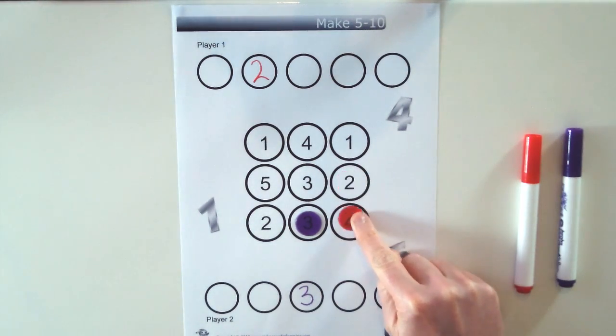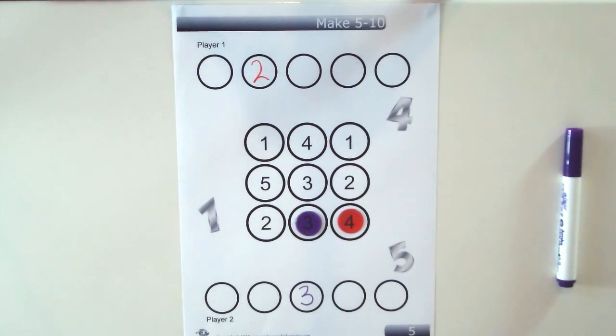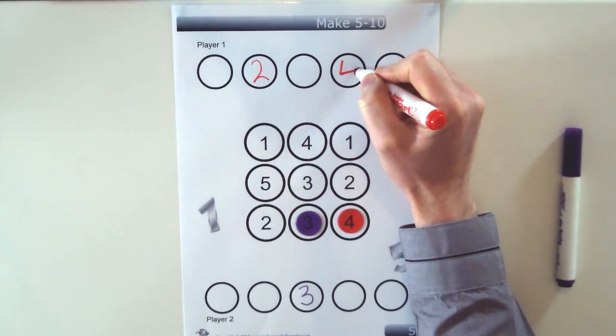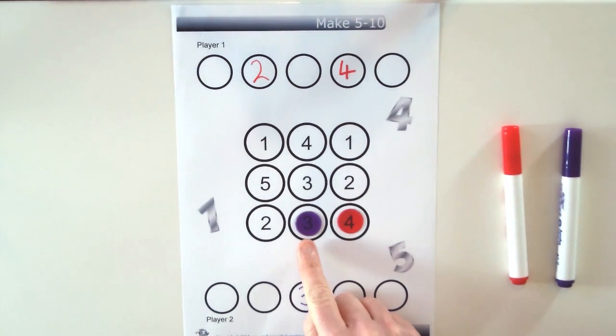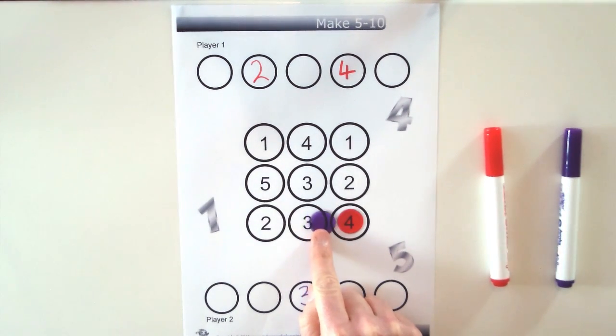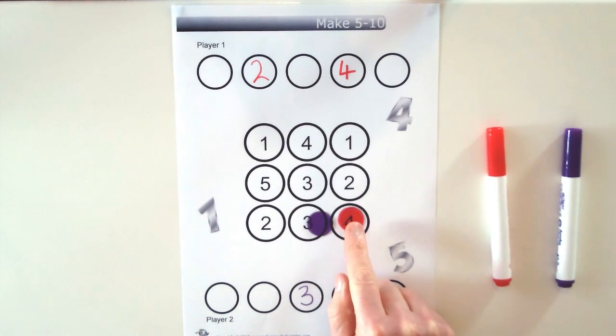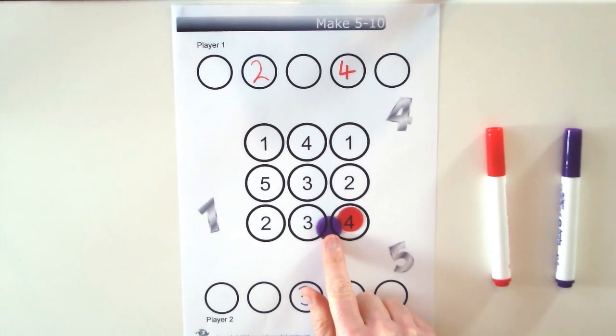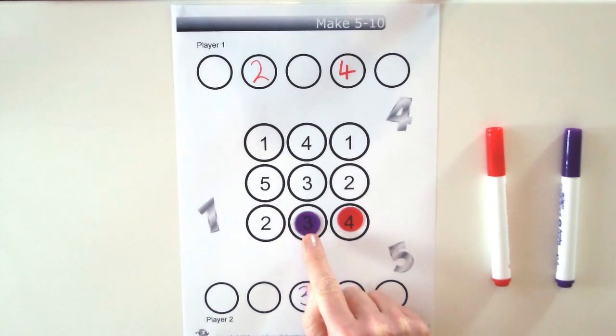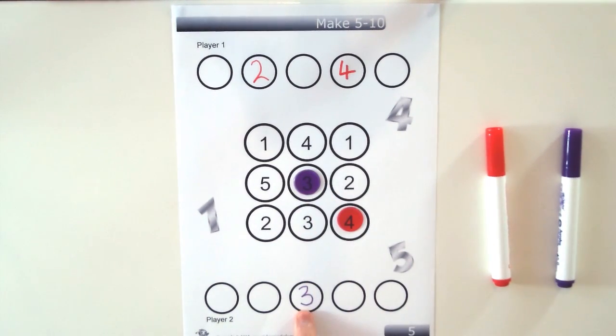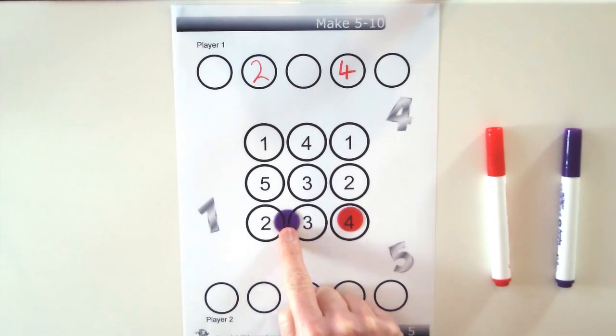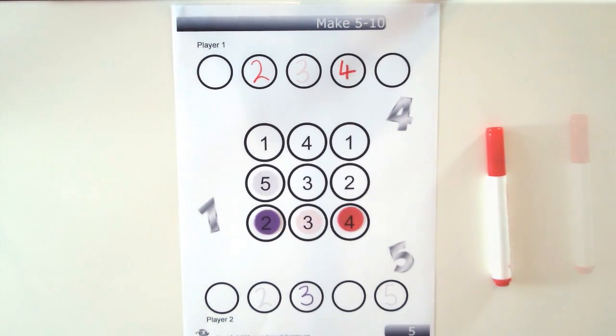Red's turn, they'll move down to the 4 and put the 4 in its right spot. Now a player isn't allowed to move onto a circle that's occupied by the other player. So purple isn't allowed to move to the 4 there. They could move to the 3 but it's pretty pointless because they've already got a 3. So they're going to move back to the 2 that they started on.